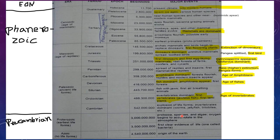Also remember: mammals are dominant in Oligocene, hominids in Pliocene, ice age is Pleistocene, and modern humans in Holocene. Age of reptiles is called Mesozoic Era and age of mammals is Cenozoic. You should remember that also.